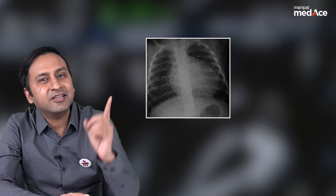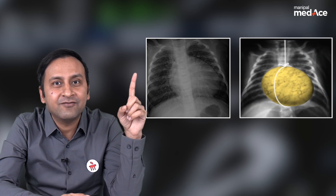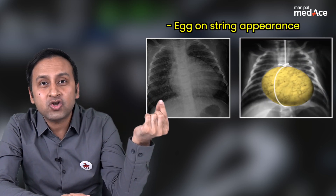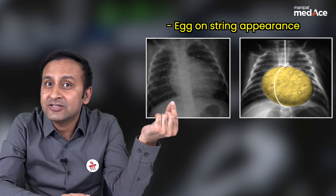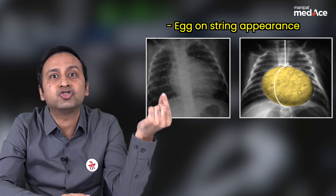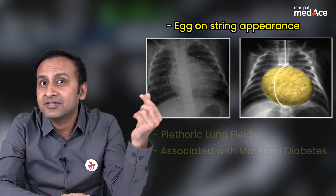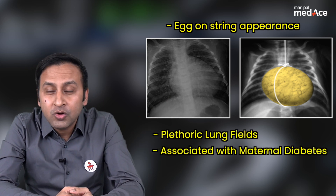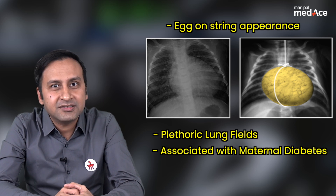Now let's talk about our fourth case. Look at the shape of the heart — it typically looks like an egg being held over a string. So this egg-on-a-string appearance, or egg-on-a-side appearance, is seen in cases of transposition of great arteries. This is a condition associated with plethoric lung fields and with maternal diabetes.